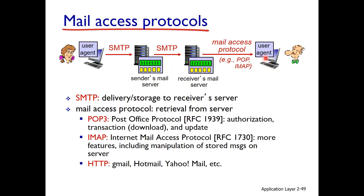For the user agent like Bob, to access and retrieve email from the mail server, we need a mail access protocol. The email access protocol is used for retrieval from servers. POP3 stands for Post Office Protocol version 3. It has three phases: authorization, transaction — meaning download — and update, such as whether to delete the mail or not.